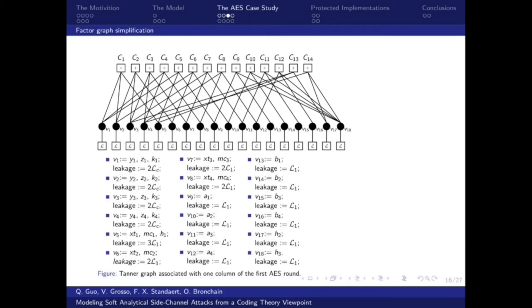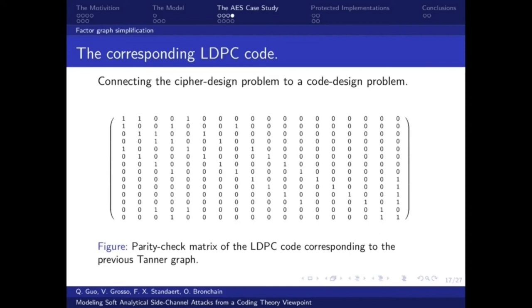So we have a Tanner graph in the coding literature, and the graph is much more simplified. From this Tanner graph, we could define an adjacency matrix. And we could also define an LDPC code by treating this adjacency matrix as a parity check matrix. If we think reversely, we could define a cipher from an LDPC code, thereby connecting the cipher design problem to a code design problem. We hope the tools in the LDPC code design could be helpful to design SASCA-resistant ciphers. This could be a good topic for future research.